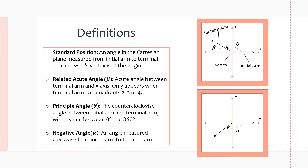Let's go over all the definitions for these new terms mentioned in the success criteria. First, we have standard position, which is a way to show or express an angle in a Cartesian plane. It is measured from the initial arm to the terminal arm, and its vertex is at the origin.